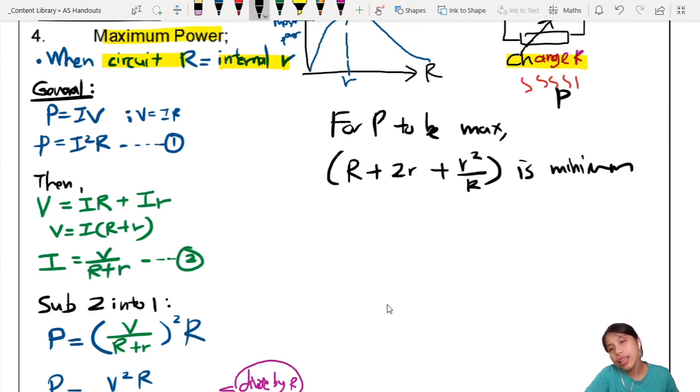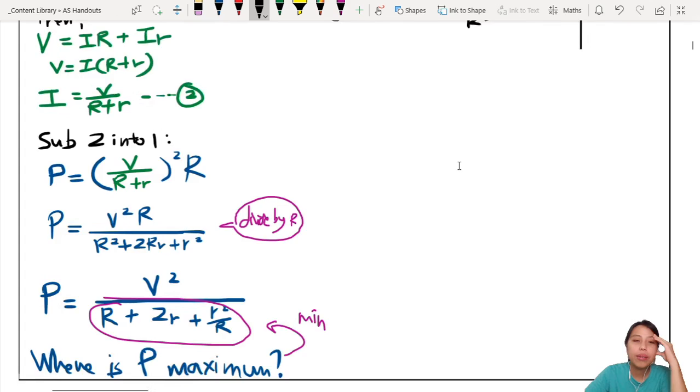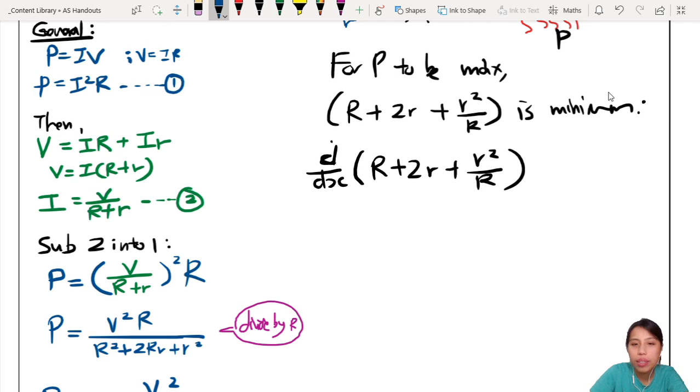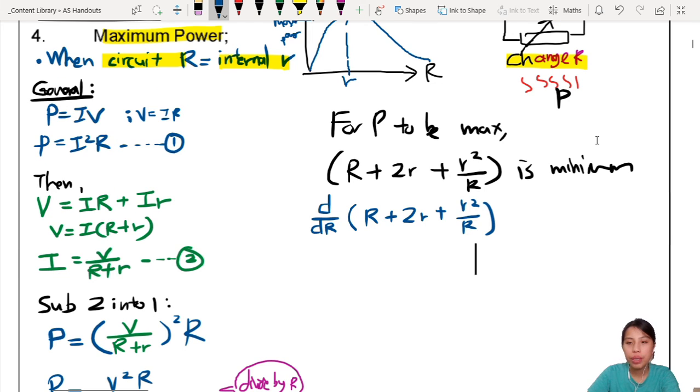So for P to be max, your denominator must be minimum. So denominator was what again just now? R + 2r + r²/R is minimum. And how do you do that? Now it's less fraction, so it's easier to differentiate. If not, just now you look, got R, so many R down there, very tiring to differentiate so many things. So this is a shortcut. Now we only need to find where this thing is minimum. So I'm going to differentiate this. d/dR of (R + 2r + r²/R).